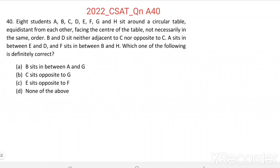Question number 40. Eight students A, B, C, D, E, F, G and H sit around a circular table, equidistant from each other facing the centre of the table, not necessarily in the same order.